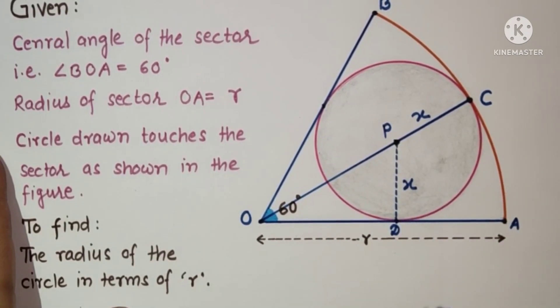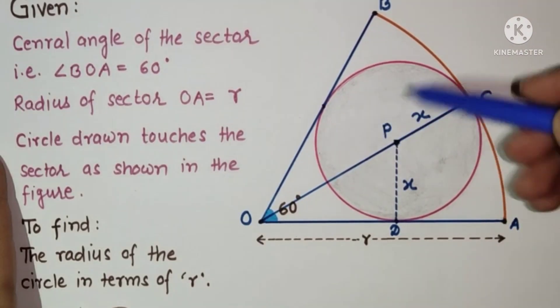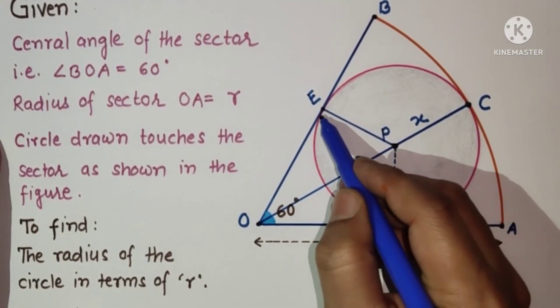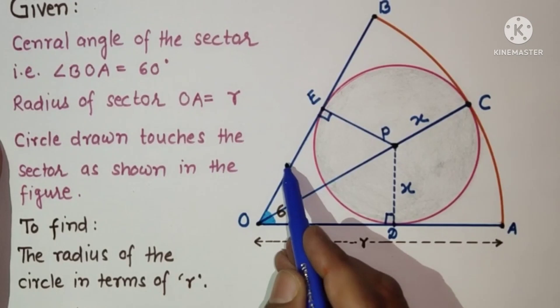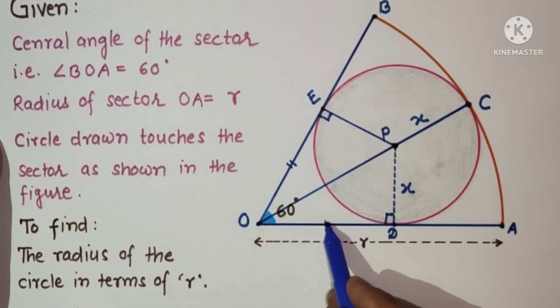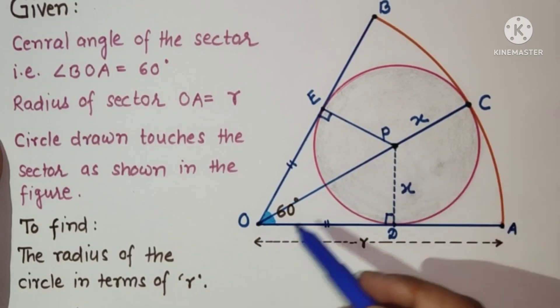If we join this, this is 90 and this is 90. OD is equal to OE, as we know that the tangents drawn from an exterior point to the circle will be equal. So OD is equal to OE, and OP is equal to OP, it is common.